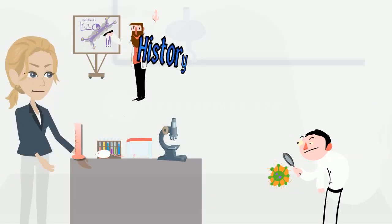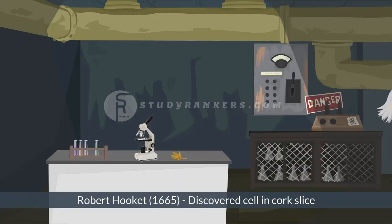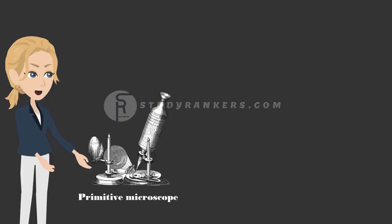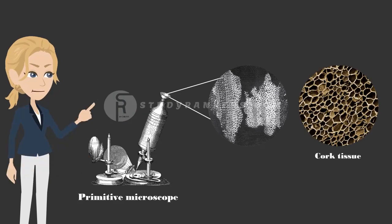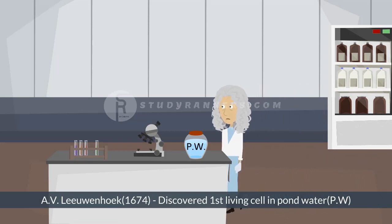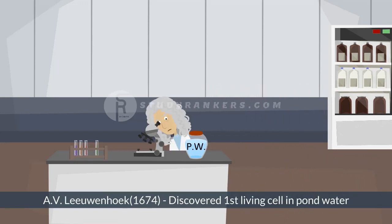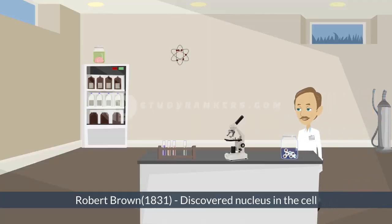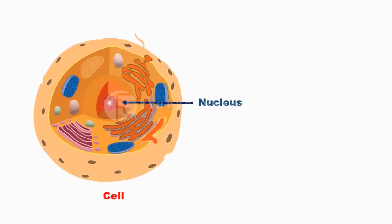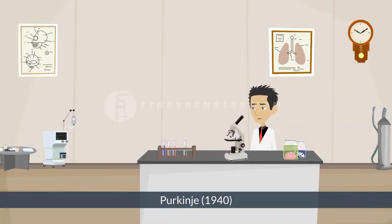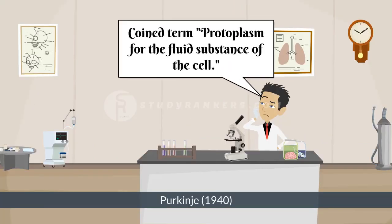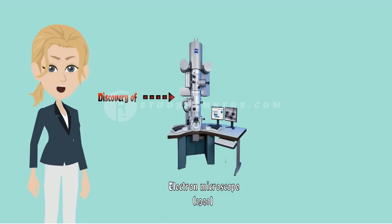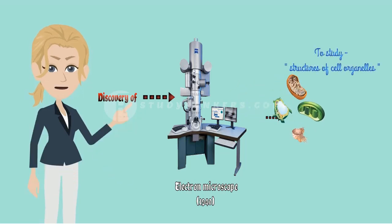If we talk about the history of discovery of the cells, we came to know that Robert Hooke was the first to discover cell in 1665 in cork slice with the help of primitive microscope. A.V. Leeuwenhoek in 1674 was the first to discover free living cells in pond water with the improved microscope. Robert Brown discovered the nucleus in the cell in 1831. Purkinje coined the term protoplasm for the fluid substance of the cell in 1839. The discovery of electron microscope in 1940 made it possible to study the structures of cell organelles.